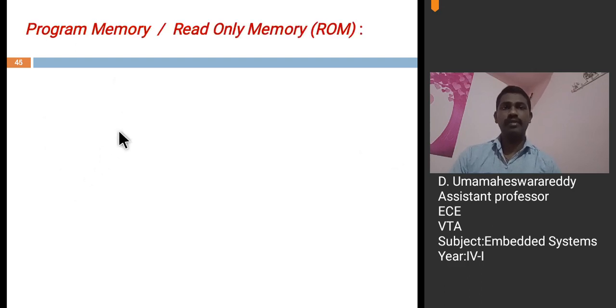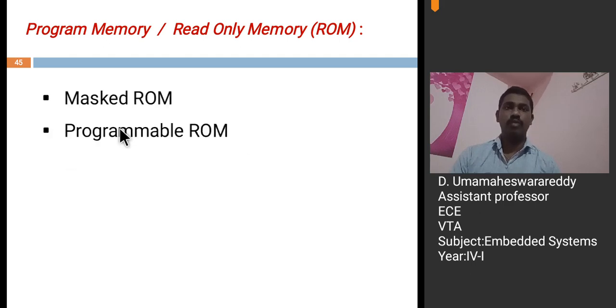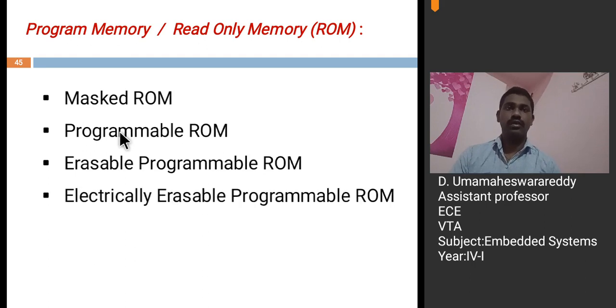Coming to different types of ROM. These are the different types of ROMs we are having: Masked ROM, PROM, EPROM, EEPROM and Flash memory. First one, Masked ROM, M-ROM.